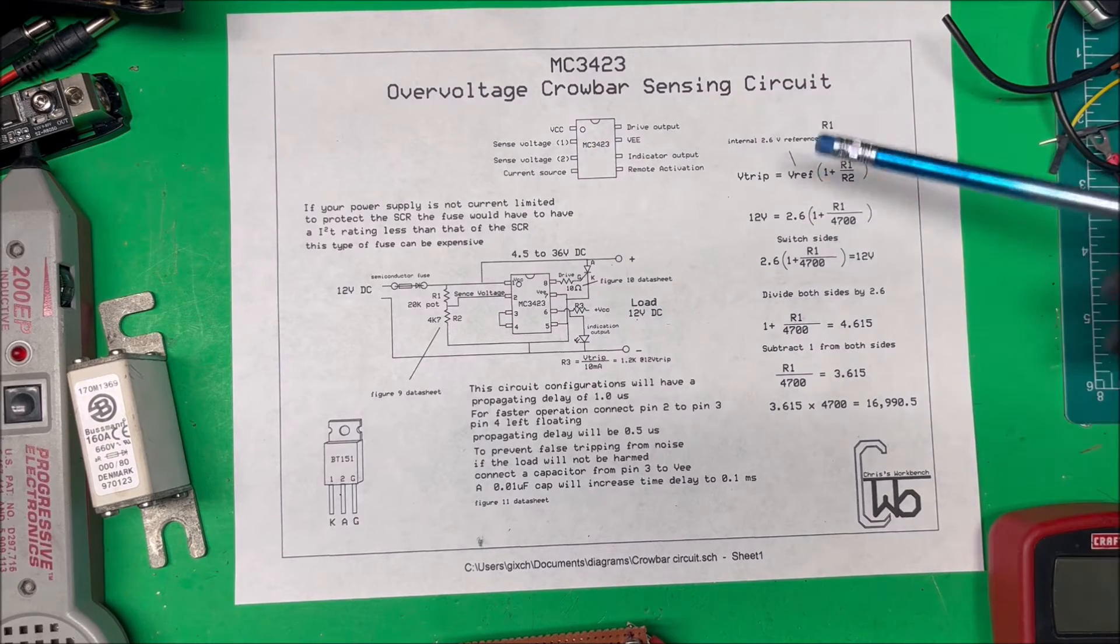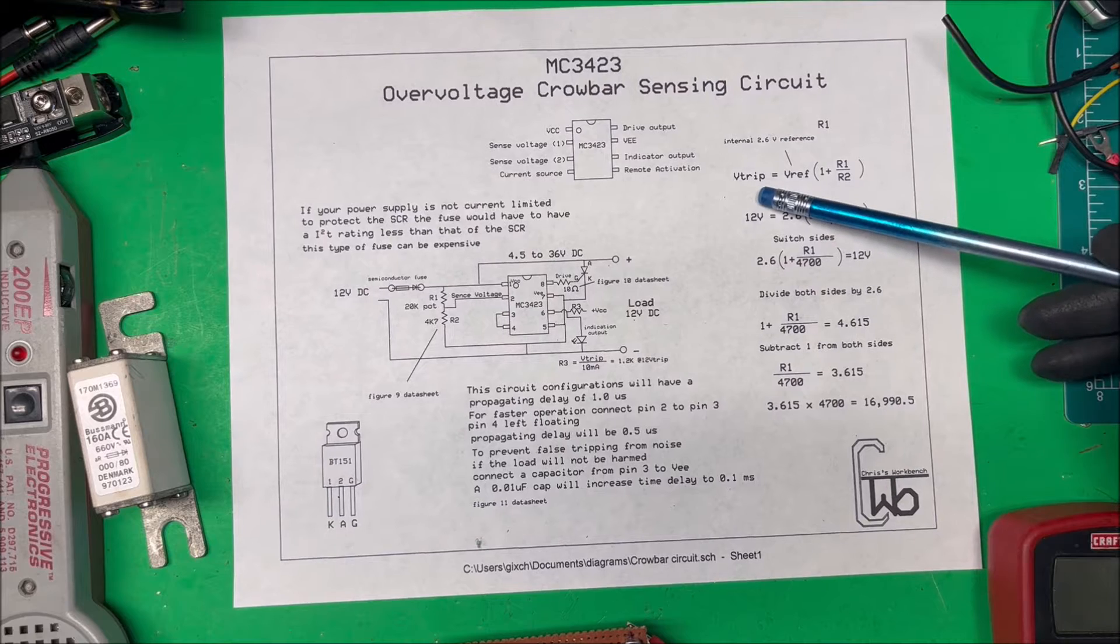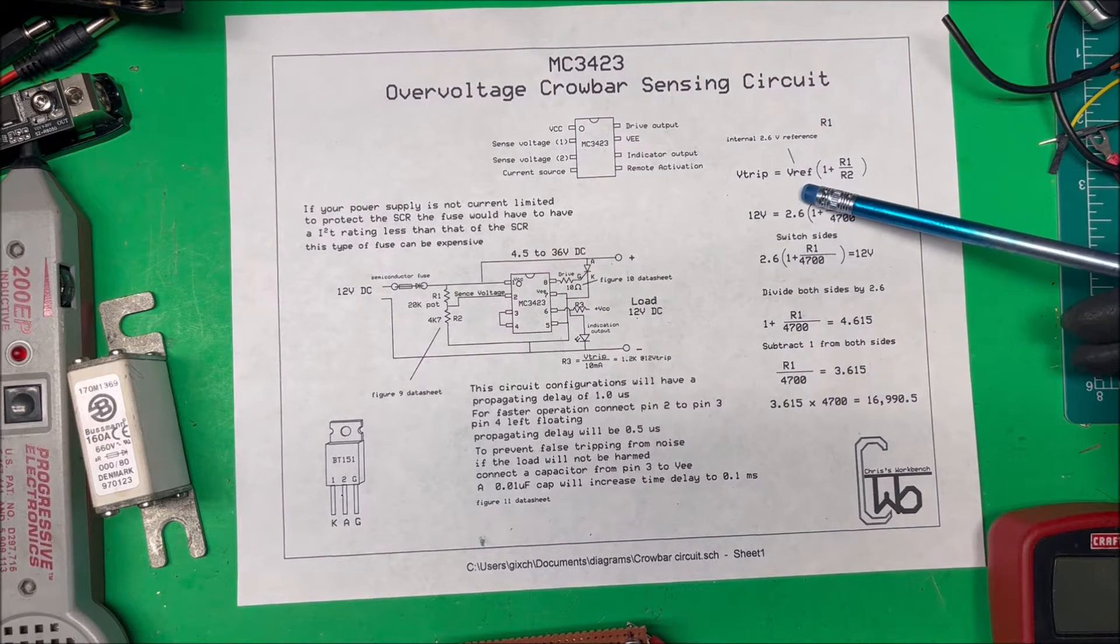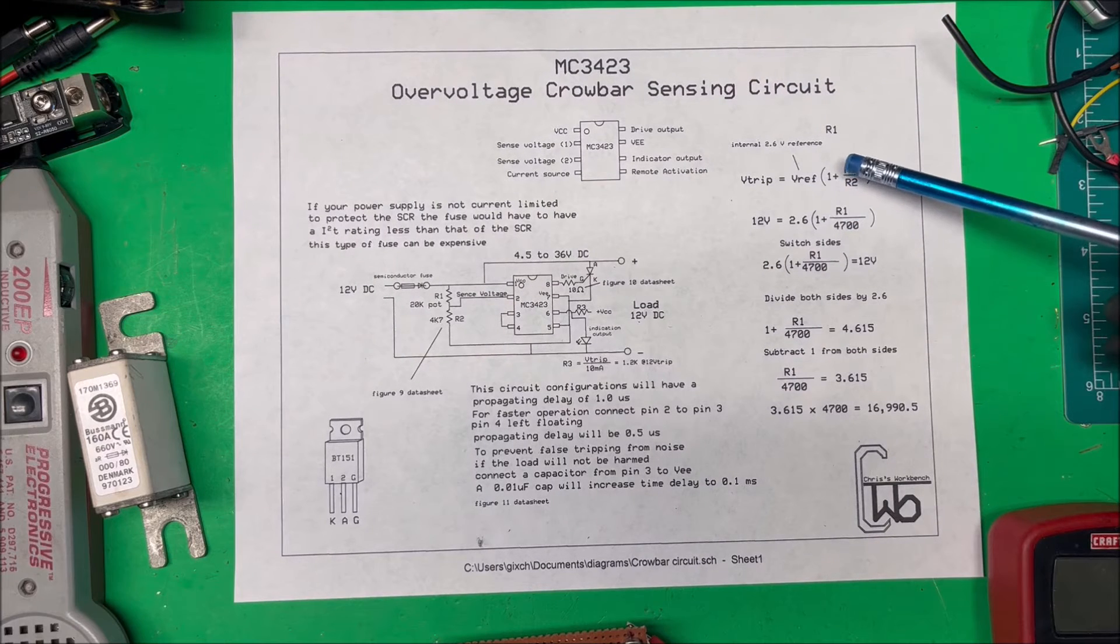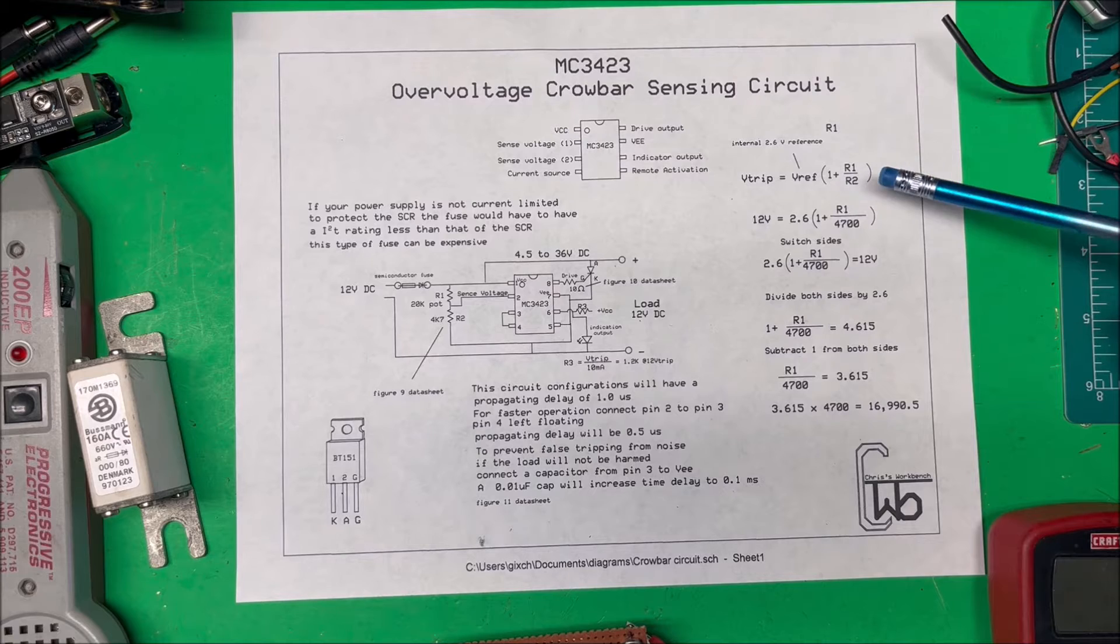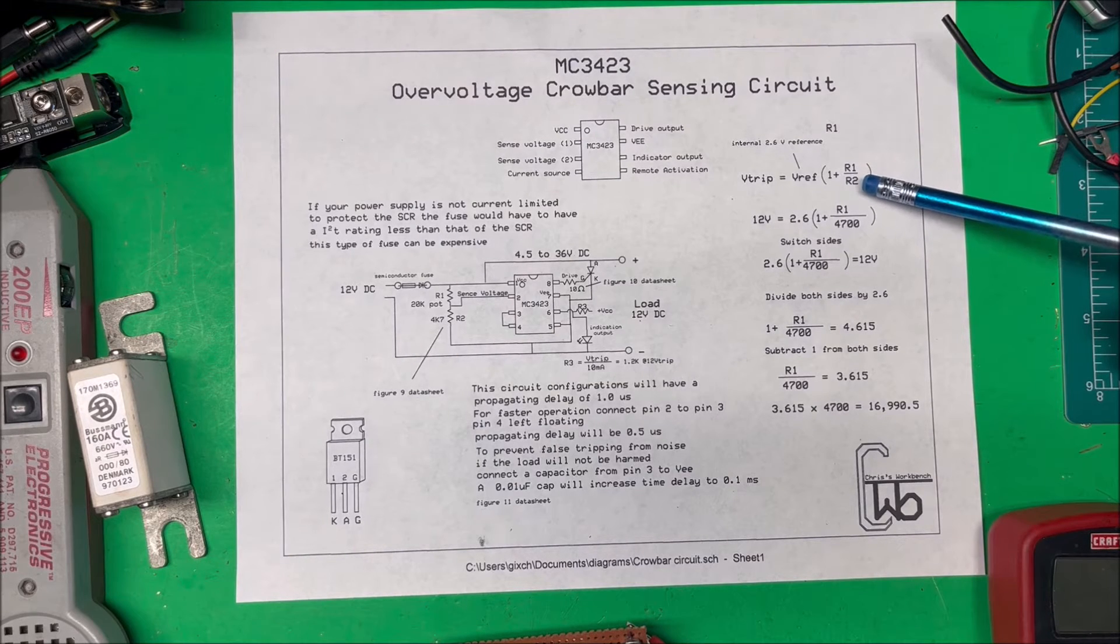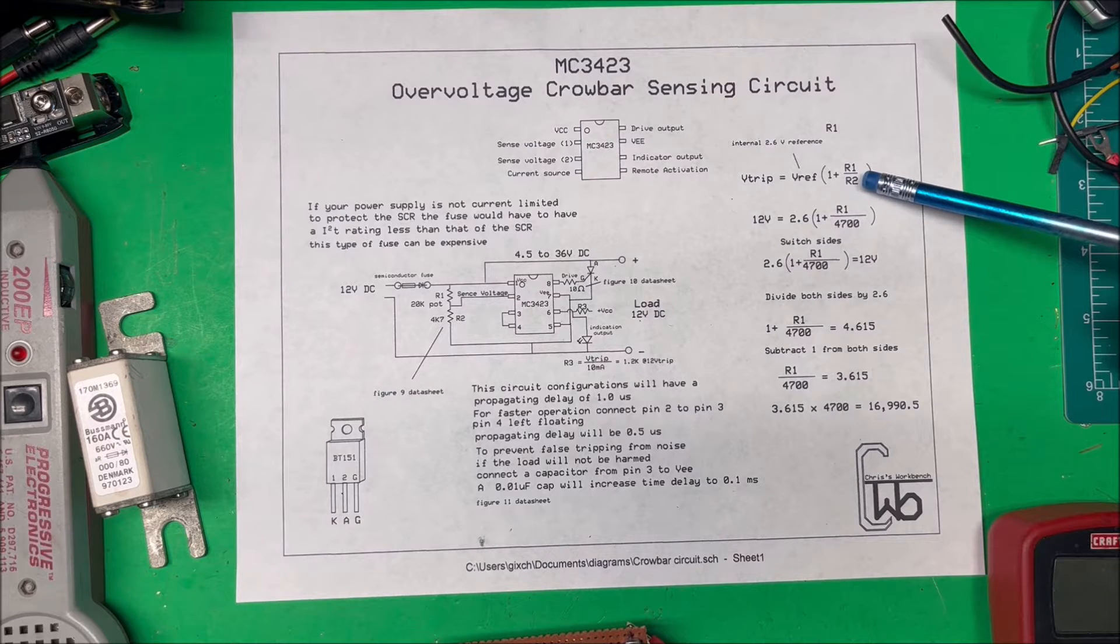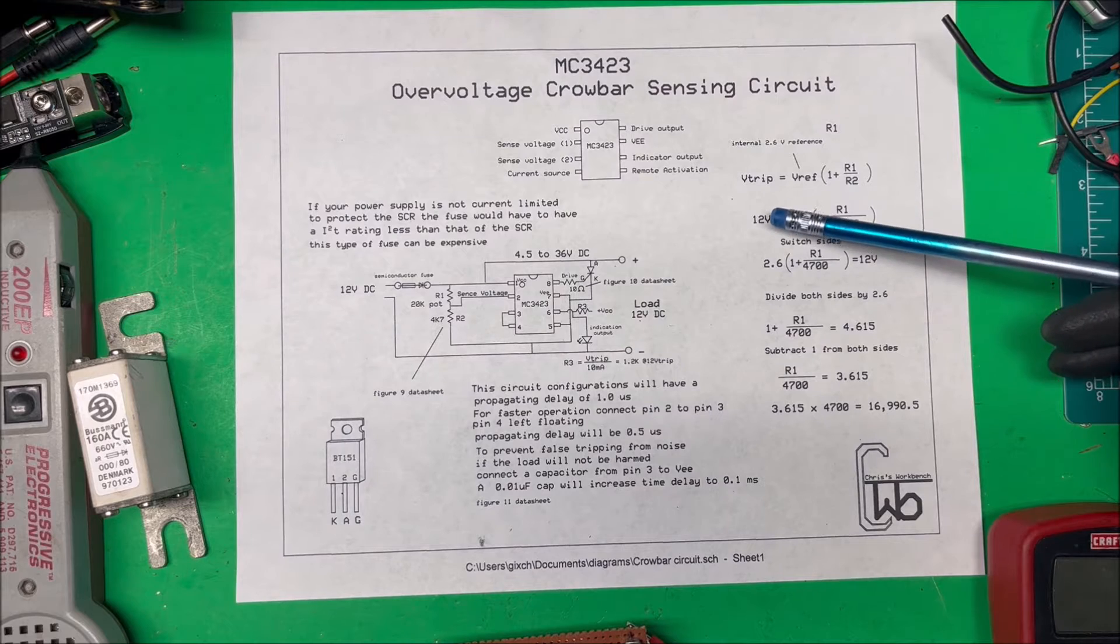Here's the formula for the voltage divider: V trip equals V reference, which is 2.6 volts, times 1 plus R1 over R2. R2 in the datasheet says it should be less than 10k, and we're going to use a 4.7k ohm resistor.